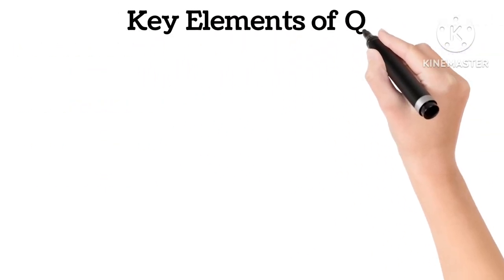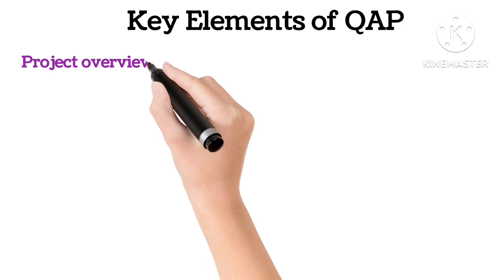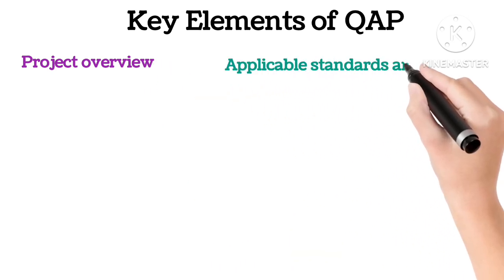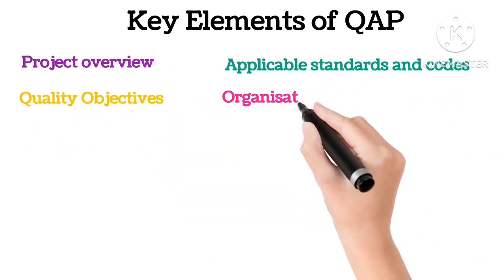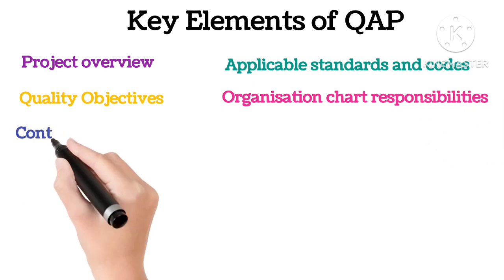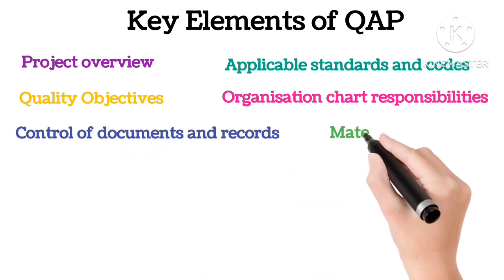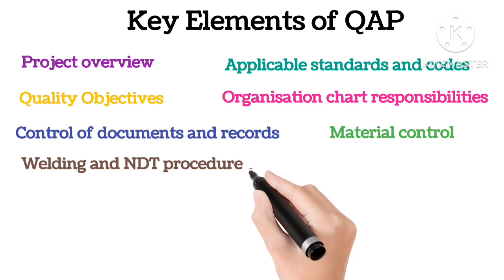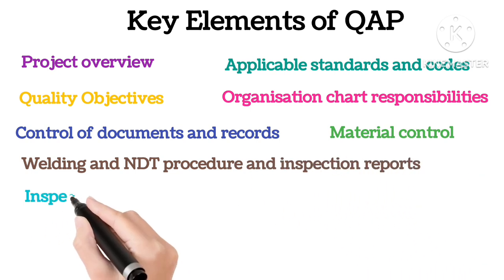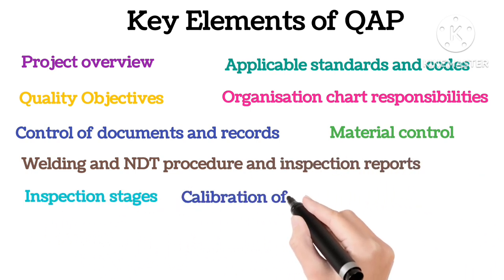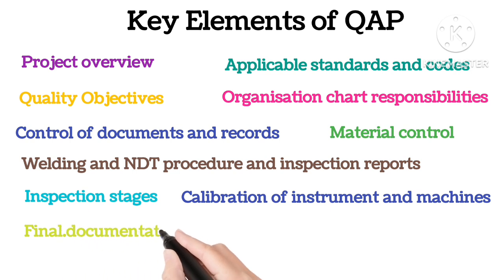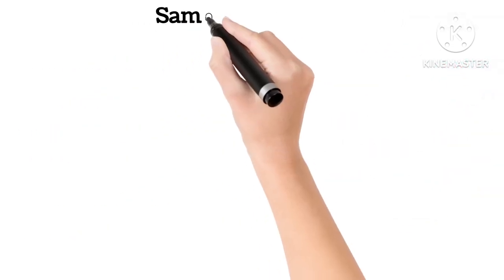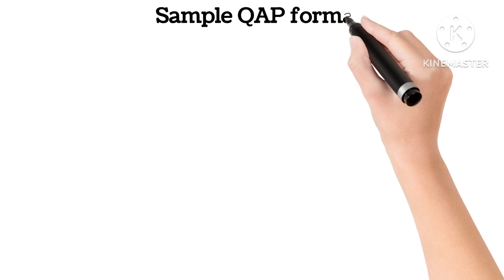Key elements in QAP: project overview; applicable standards and codes; quality objectives; organization chart and responsibilities; control of documents and records; material control; welding and NDT procedures and inspection reports; inspection stages; calibration of instruments and machines; and final documentation. The QAP is usually approved by the client and followed throughout the project life cycle. This table helps everyone understand what to check, how and when.